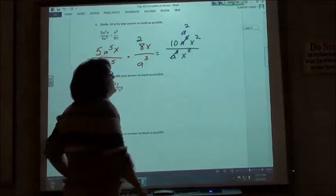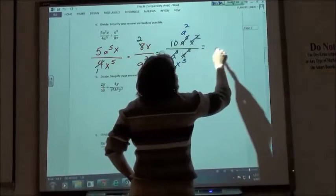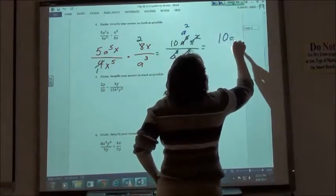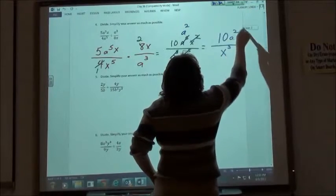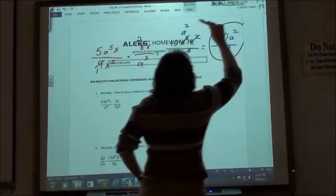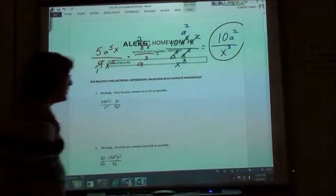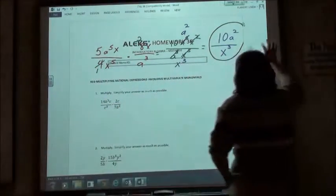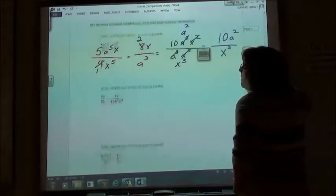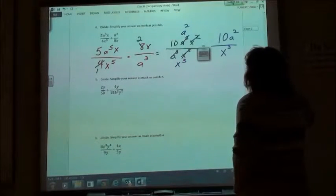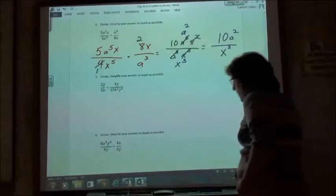A squared, and two x's, which is 3 on the bottom. Yep, so my answer would be 10a squared over x to the 3rd. My board went crazy on me. Just jumped right to a whole different spot. 10a squared over x to the 3rd. Alright.